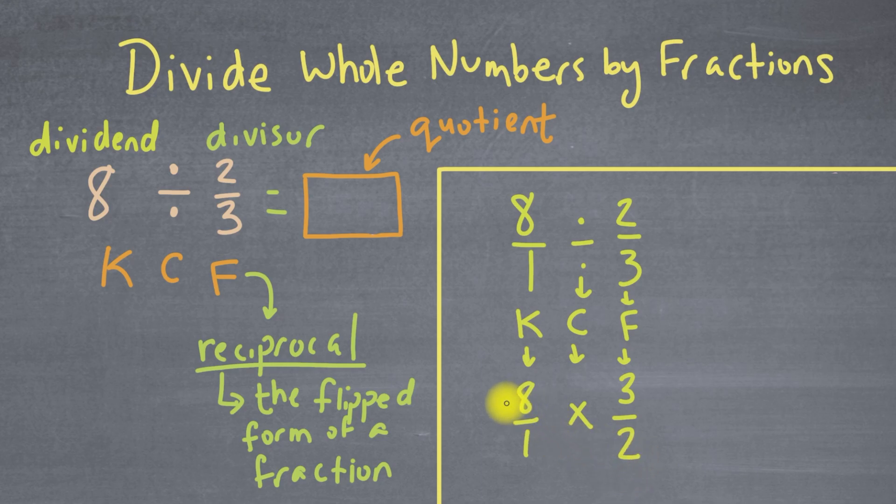So now that we have it set up as a multiplication problem, all we have to do is multiply the tops and then multiply the bottoms. So here we've got 8 times 3 equals 24. Again, 8 times 3 equals 24. So that is our top or our numerator. And here we've got 1 times 2, and that is just 2. And that is our new denominator.